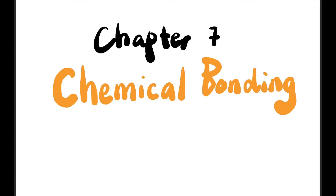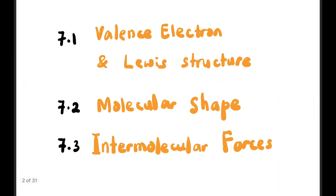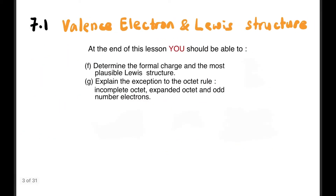Hi guys, welcome back to the channel. Still in Chapter 7, Chemical Bonding, and this is 7.1 Part 3: Valence Electron and Lewis Structure. At the end of this lesson, you should be able to determine the formal charge and use it to determine the most plausible Lewis structure, and explain the exceptions to the octet rule.